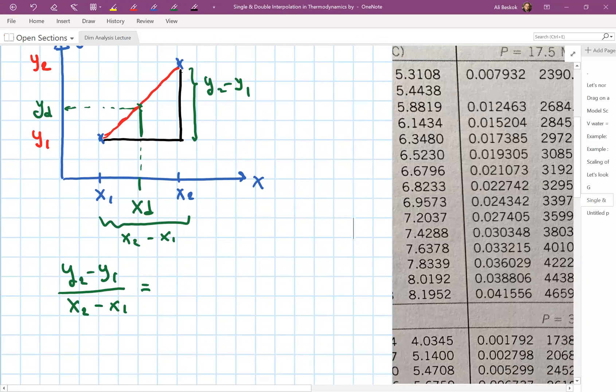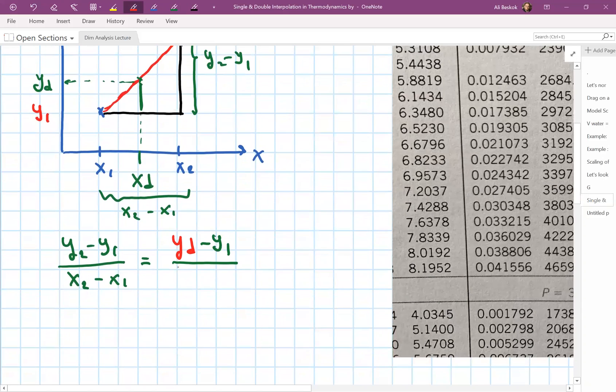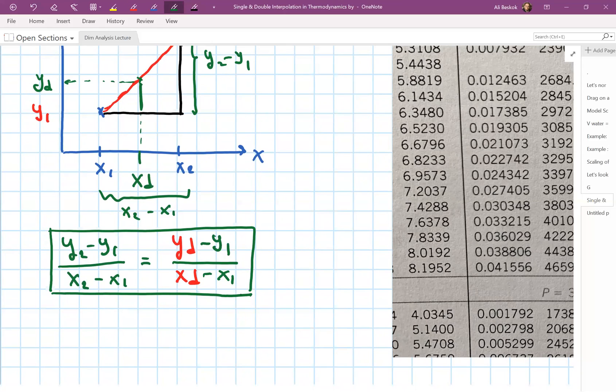So let's write it as y2 minus y1 divided by x2 minus x1 equals, because of similar triangles, yd minus y1 divided by xd minus x1. This is the basic idea of the interpolation scheme we'll use. Even if you switch the locations of 1 and 2, you'll still get the correct answer as long as you're consistent. This is the basic interpolation formula.